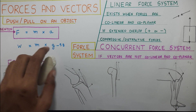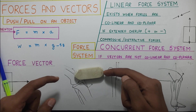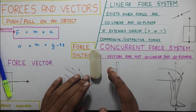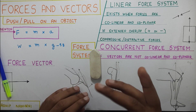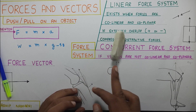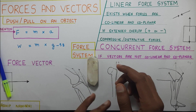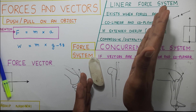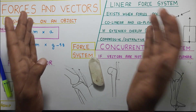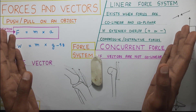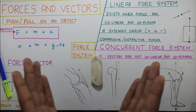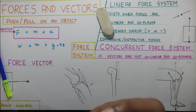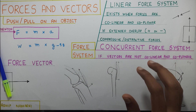To illustrate: if I take a rubber and one force pushes it to the right, and another force pushes it to the left — these two forces are not in the same line. When I combine both forces, the rubber goes straight. But how do we exactly quantify this? This is where the concurrent force system comes into play.